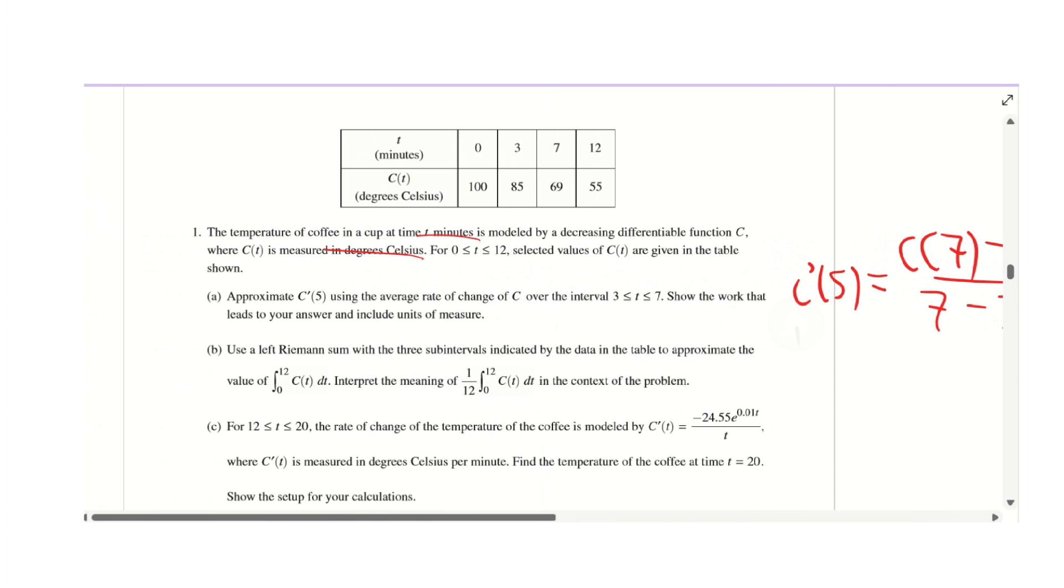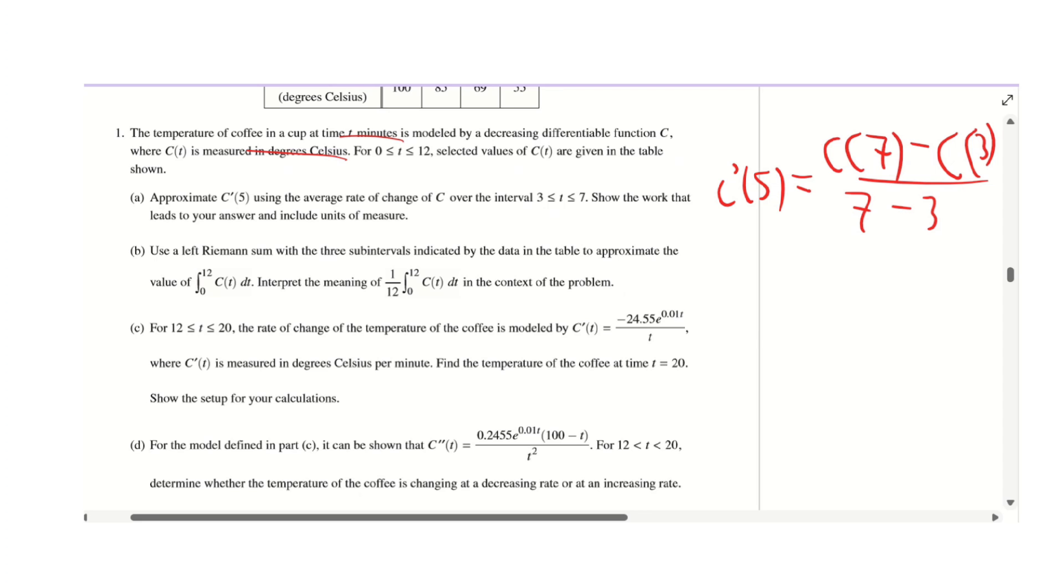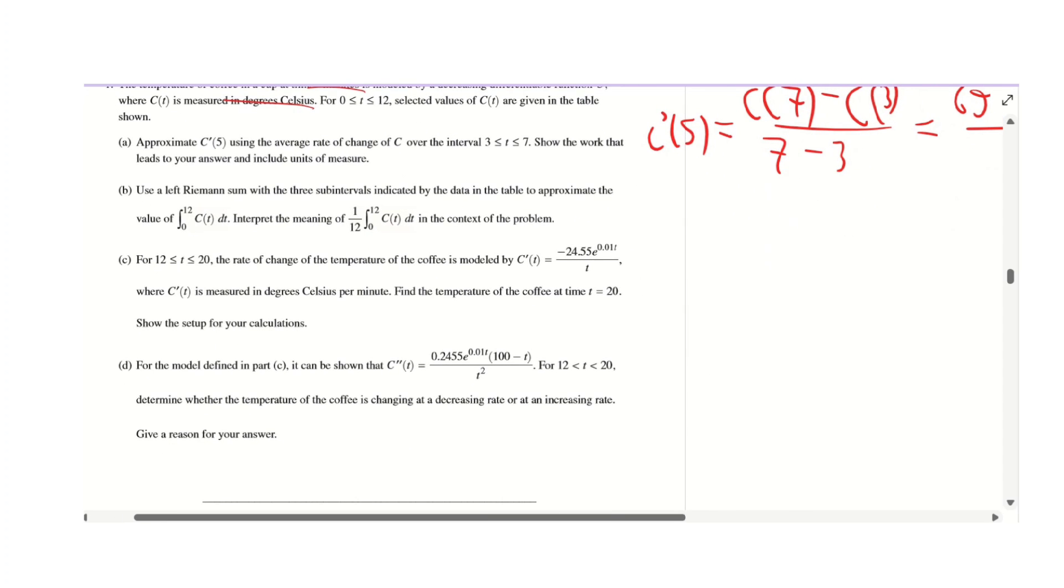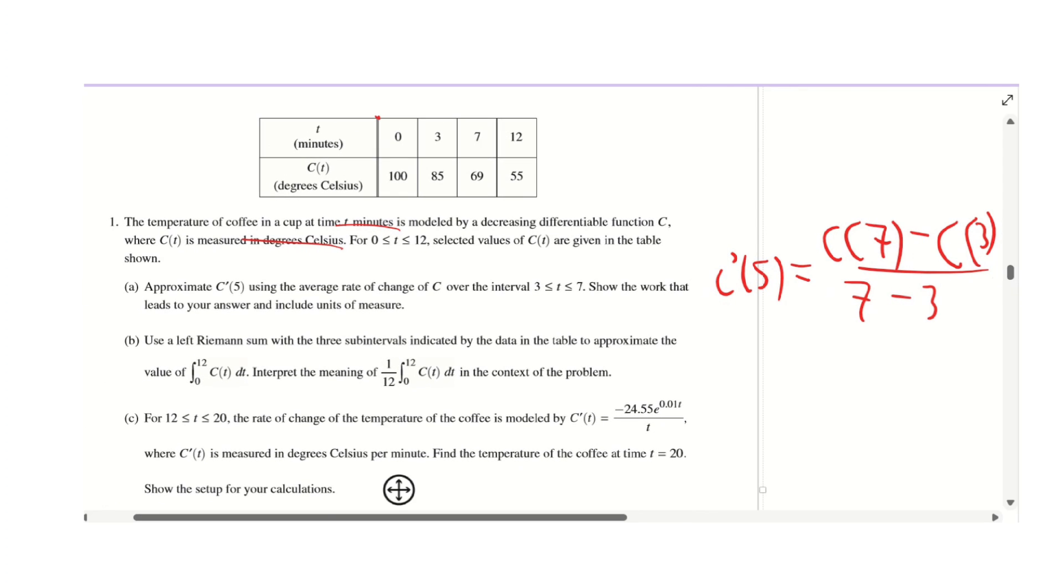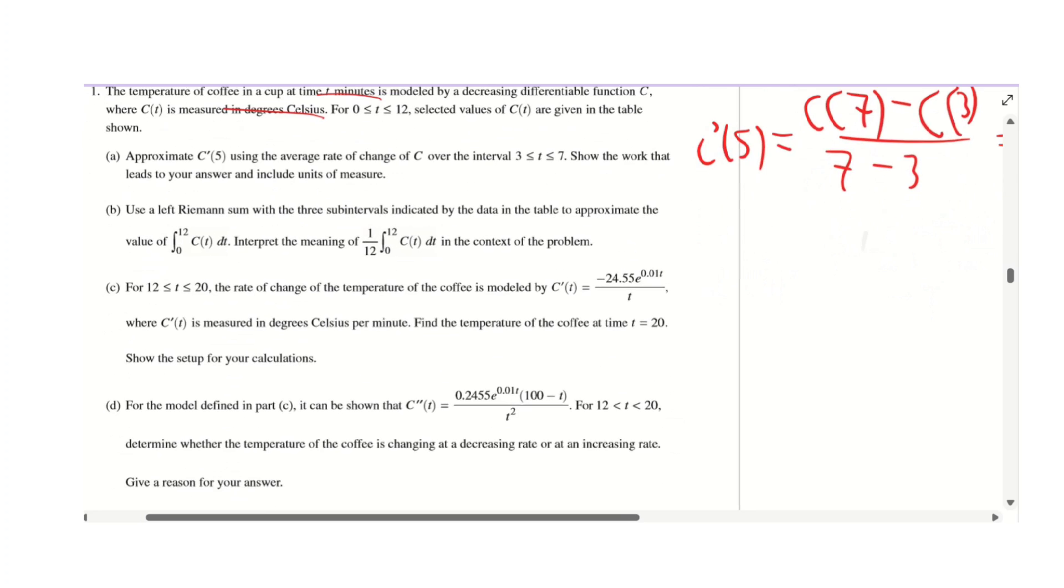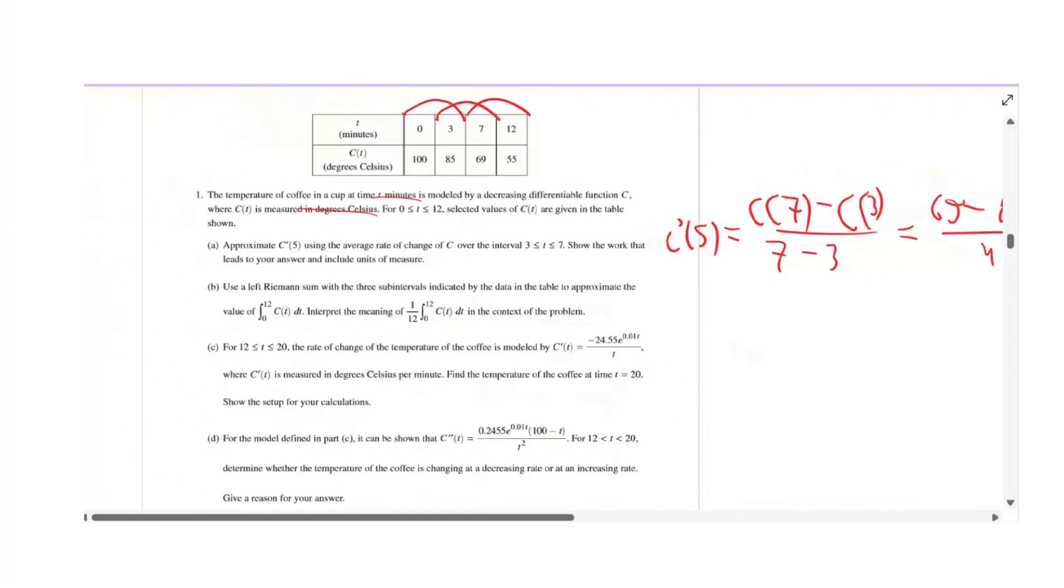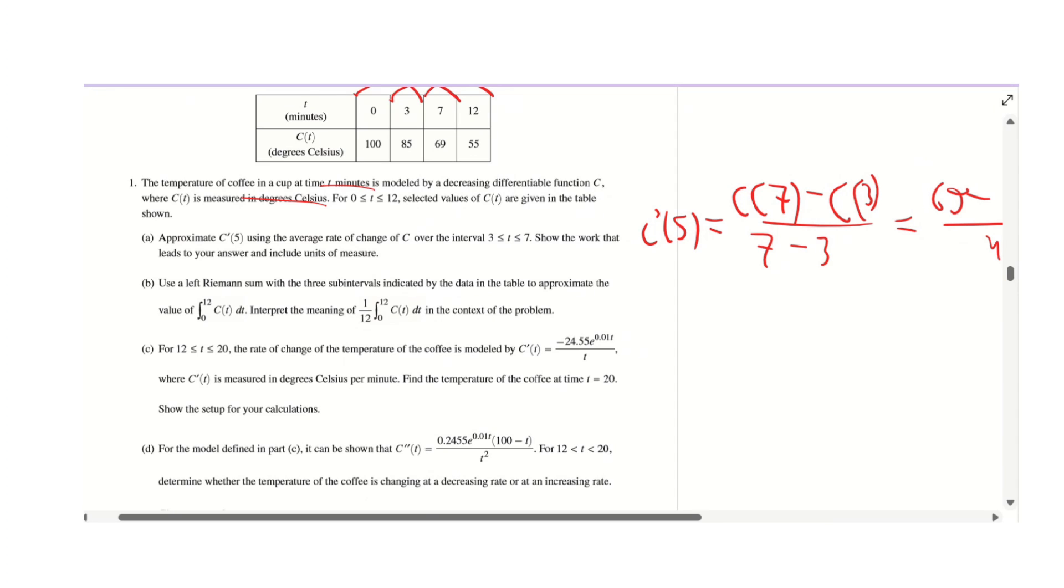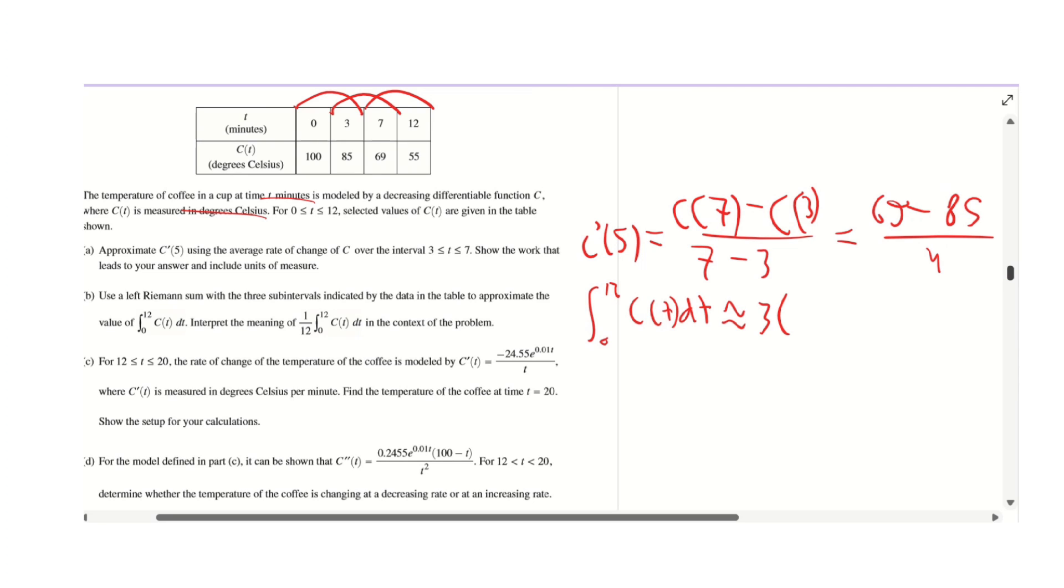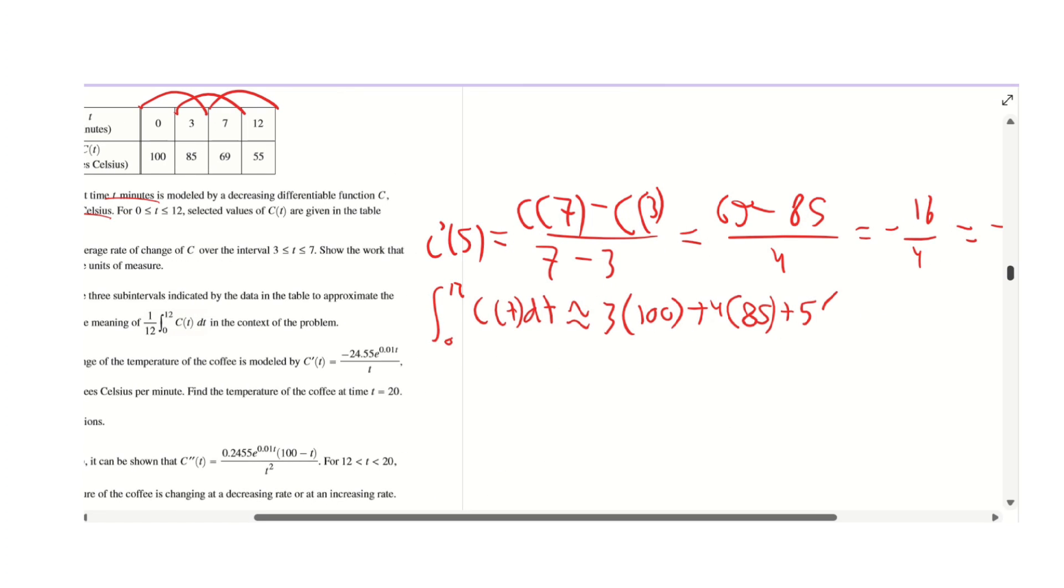Part B asks us using left Riemann sum with three intervals to approximate the integral. Using left Riemann sum, we're using the left y value. The first width of the rectangle is 3, so the integral from 0 to 12 of C(t)dt is approximately 3 times 100, plus the next interval is 4 times 85, plus the width is 5 times 69.